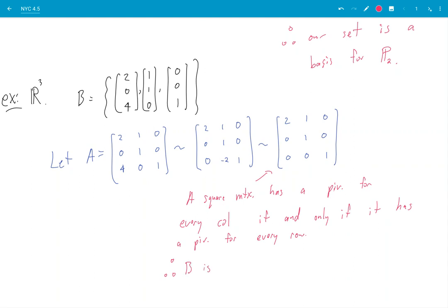So B is independent, if and only if it spans R3. Okay, so this tells you why theorem 12 makes sense in R3, R4, R5, whatever. Basically, it comes down to a property of a square matrix, you know?